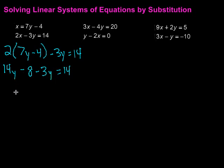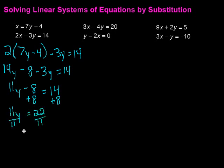Then combine like terms so 14y minus 3y is 11y, then we have minus 8 equals 14. Then I'm going to add 8 to get rid of that minus 8. So we have 11y equals 14 plus 8 is 22. Then divide by 11 on both sides and we are left with y equals 2.